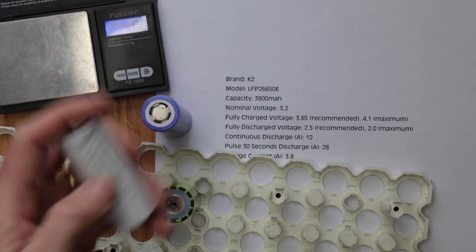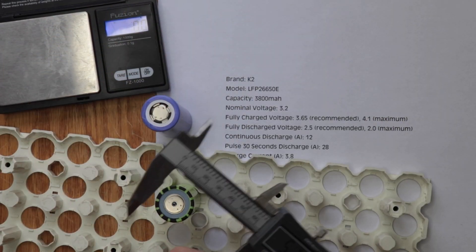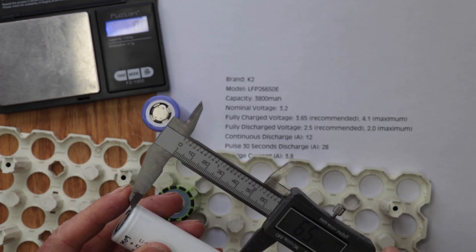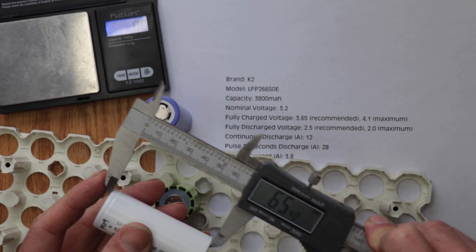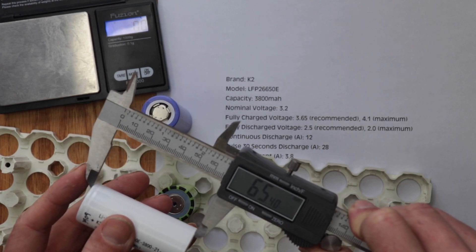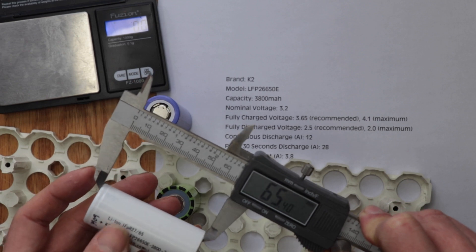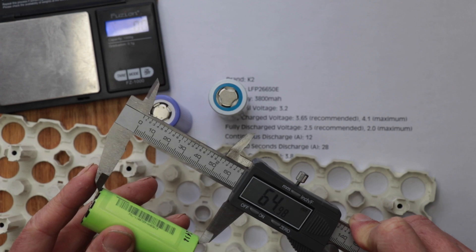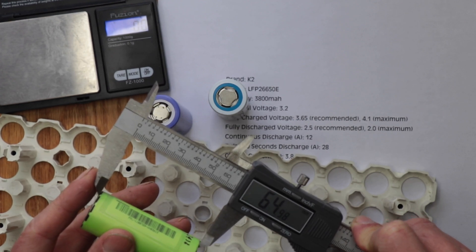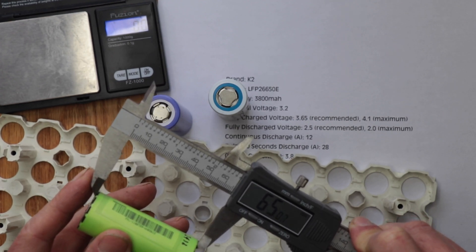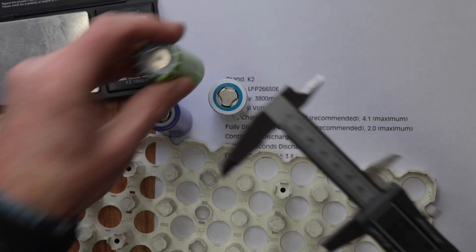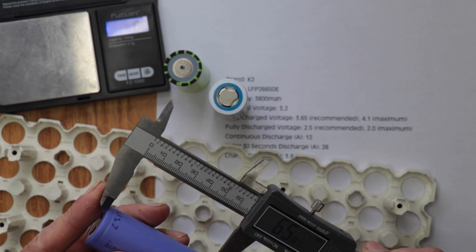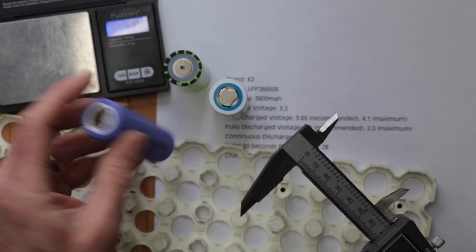All right, so let's check the height on these and see if they're the same. I don't like doing this because I don't want to short these out. So we got 65.4 on the K2 cell. Got basically 65 on this one, just shy of it. I'm sure it's just the tolerances of my calipers here. And then this one here, 65.81. So this one here is a little bit larger than even the K2.